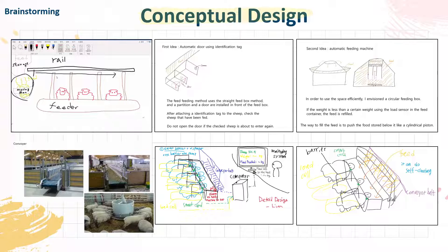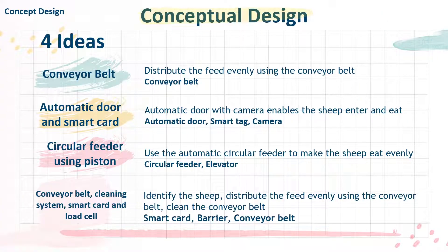The second section is conceptual design. In this process, we were able to get a wide range of solutions to the defined problem through the brainstorming process, such as conveyor belt, automatic door and smart card, circular feeder using piston, and conveyor belt cleaning system smart card.